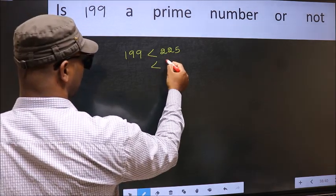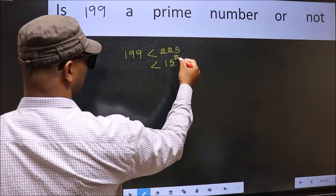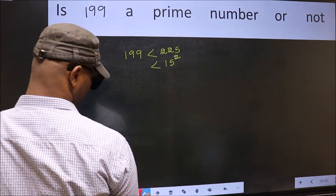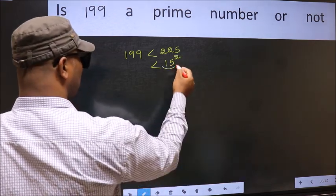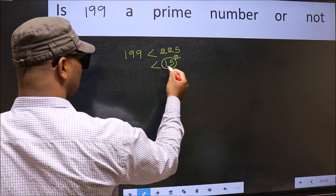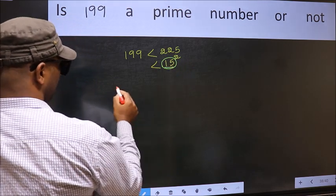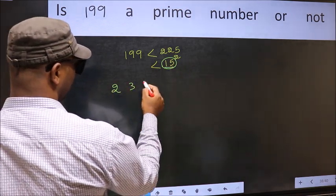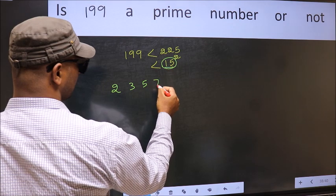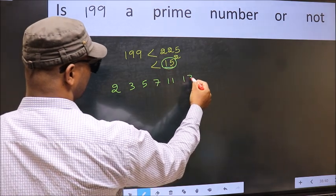225 is 15 squared. Now write all the prime numbers less than 15. They are 2, 3, 5, 7, 11, and 13.